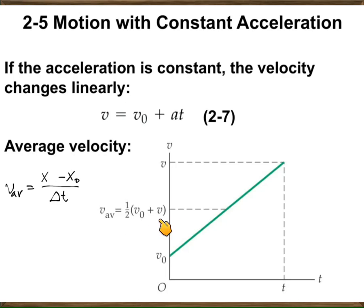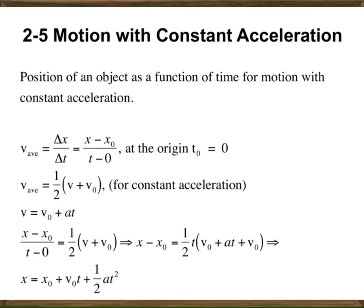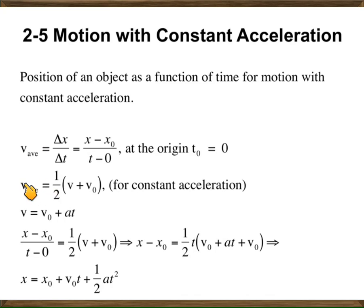Here you see the expression of the average velocity in terms of the initial and final velocities — not the displacement. This information is important when you are trying to obtain the x versus t expression for a constant accelerated motion. You have the average velocity defined in terms of displacement, and also in terms of initial and final velocities. The final velocity can be replaced by v₀ plus a times t, and since these are the same things, you can equate them to get an expression for position in the case of constant acceleration motion.